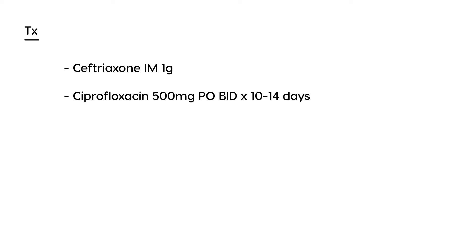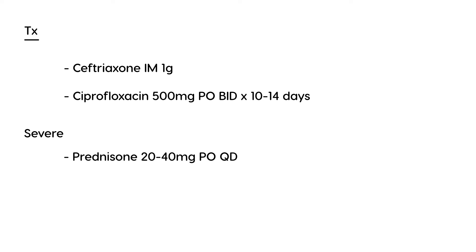If the patient is severe, you can add a steroid such as prednisone, anywhere from about 20 to 40 milligrams orally once a day for the first three days. Also, please stress to the patient that they should have adequate nutrition, because the 12% mortality most commonly occurs in people who are undernourished or malnourished.